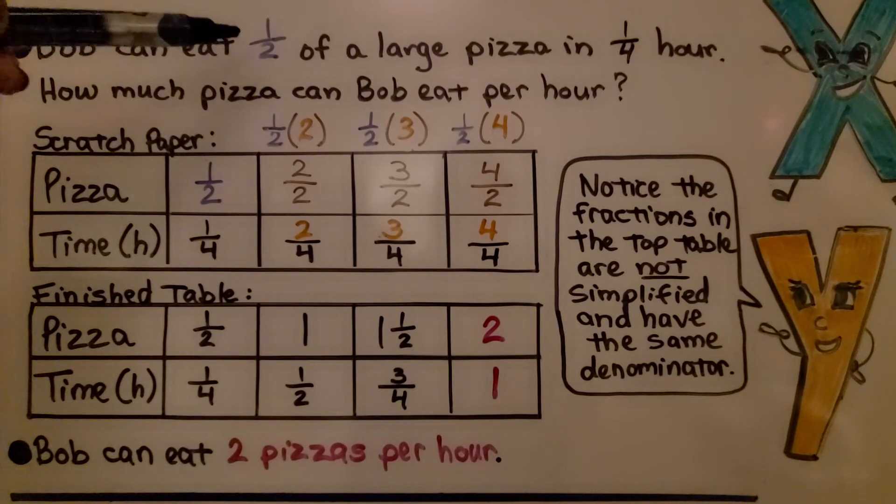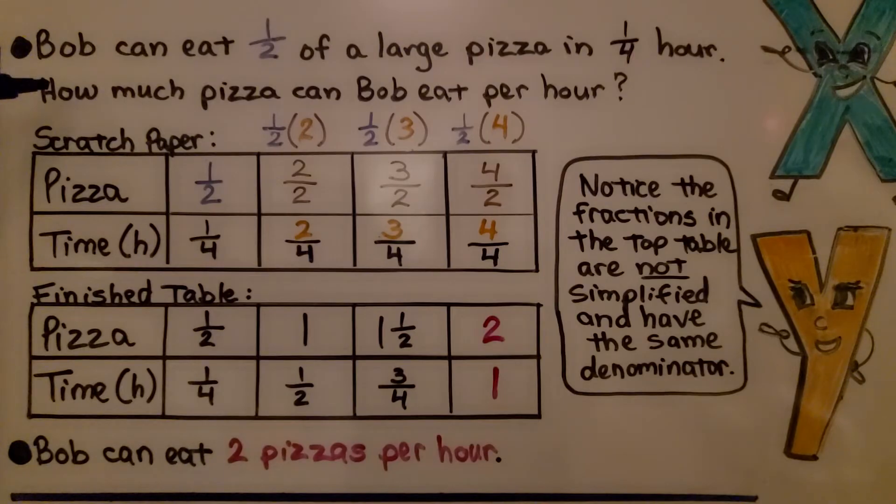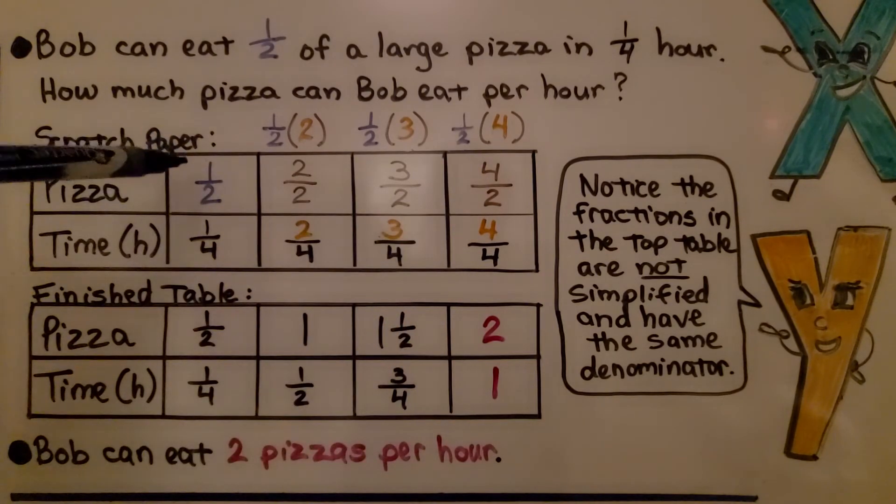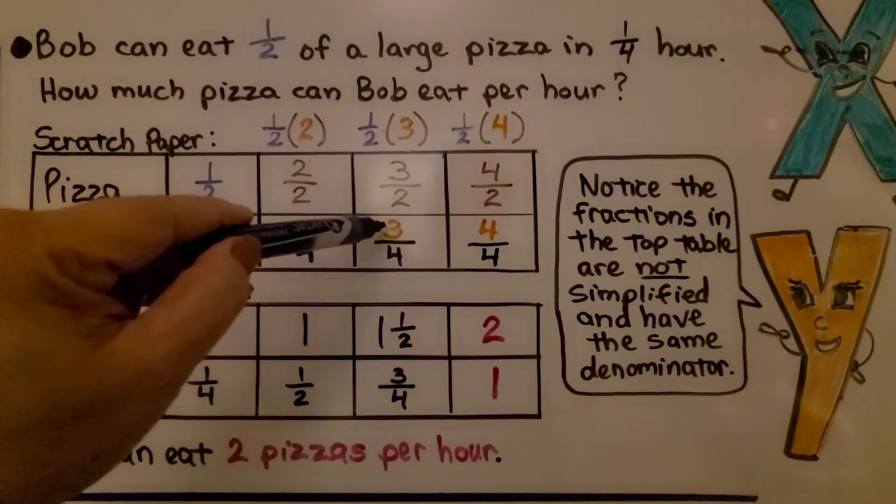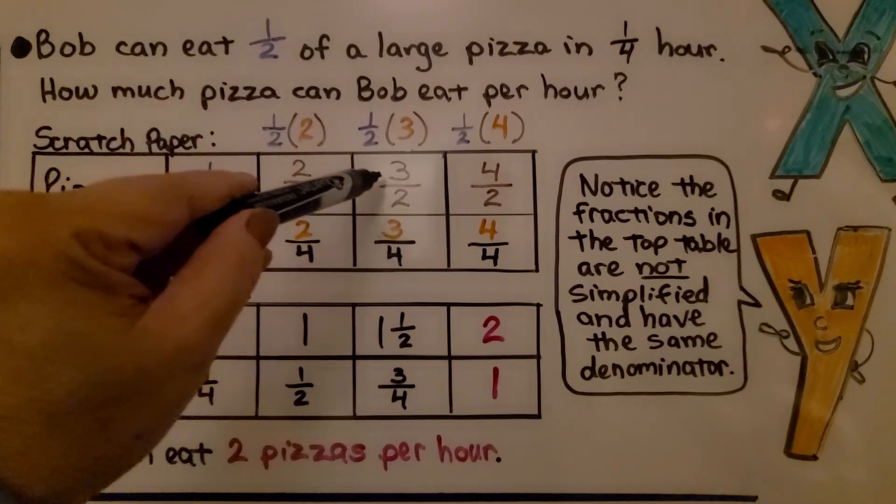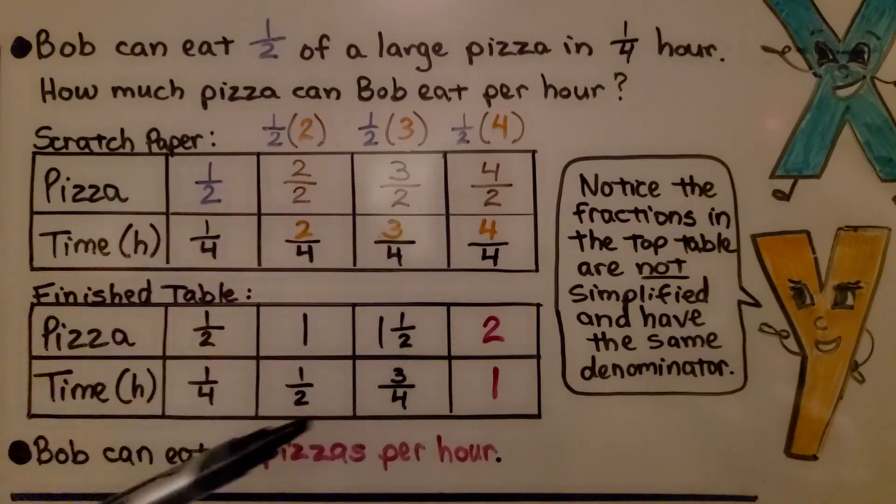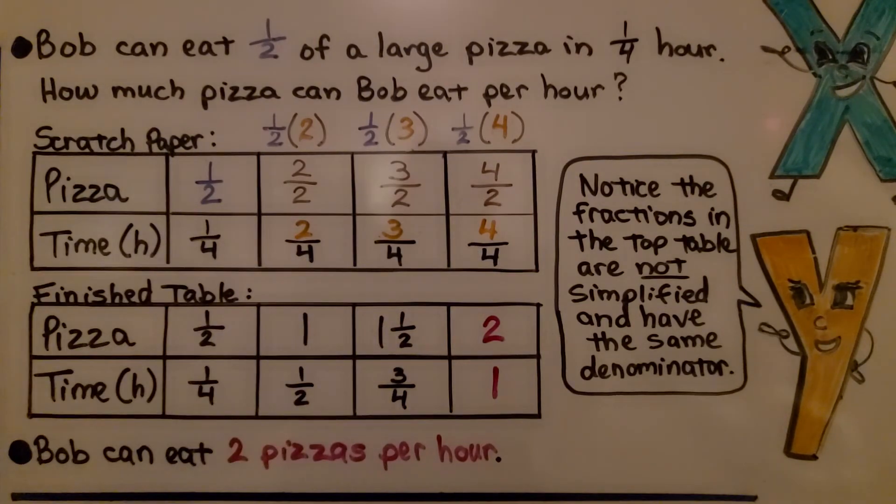Bob can eat one half of a large pizza in one-fourth hour. So how much pizza can Bob eat per hour? We can get some scratch paper and we can make a table for pizza and the times for hours. We know he can eat half of a pizza in one-fourth hour. And we can complete the table. We do one half times two, that gives us two over two. We do one half times three, that's going to give us three over two. And if we do one half times four, that's going to give us four halves. Notice the fractions in this top table are not simplified and have the same denominator for the time. So we can make a finished table and we can have all of our fractions simplified.